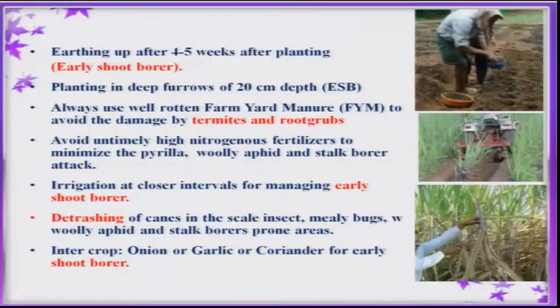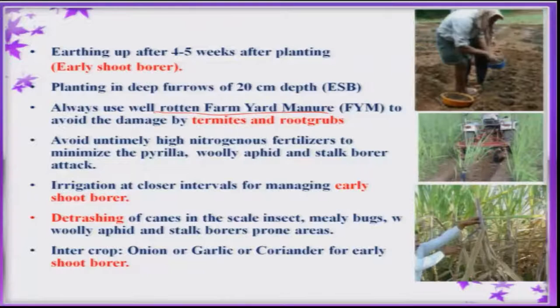For early shoot borer, earthing up is one important practice to follow, which can reduce infestation very effectively. Wherever there is a problem of termites and root grubs, one should apply well-rotted farmyard manure; otherwise it enhances the multiplication of termites and root grubs. Avoid high application of nitrogenous fertilizers, which attract sucking insect pests like pyrilla, woolly aphid, and even some borers.